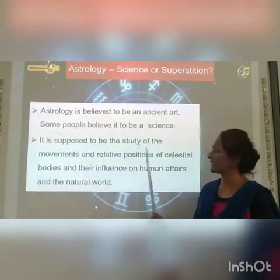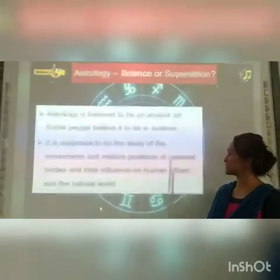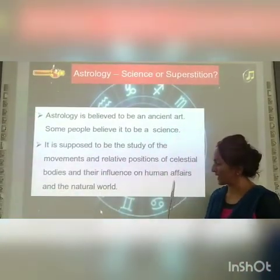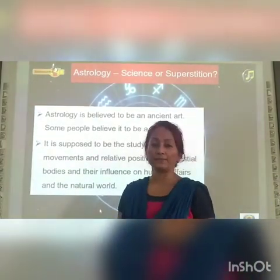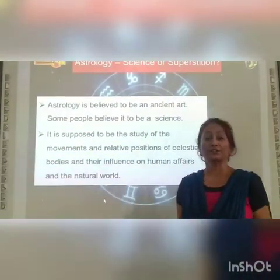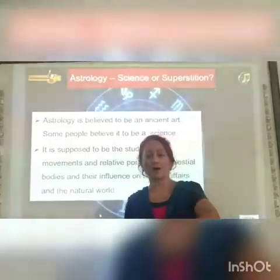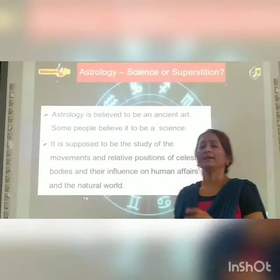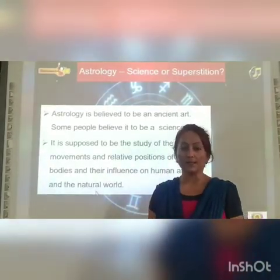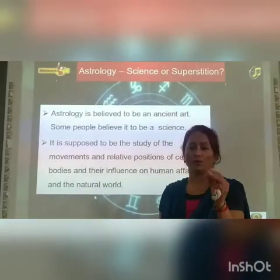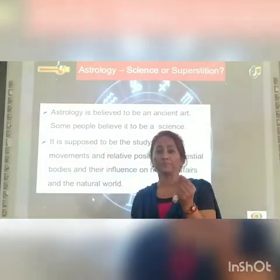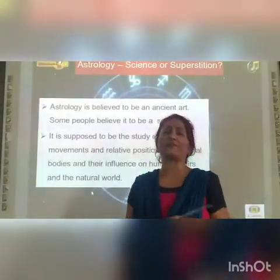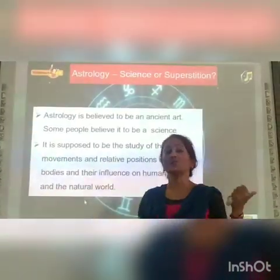Astrology is supposed to be the study of the movements and relative positions of celestial bodies — the stars, the earth, the planets, and all that. Some astrologers believe that the movement of celestial bodies have certain effects on human affairs. According to one's Rashi or horoscope, some things would have a negative effect, some a positive effect. Astrology is a very vast subject; you have to go deep into it to understand it.